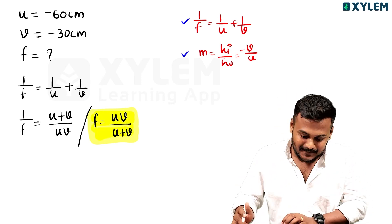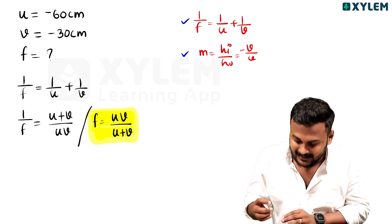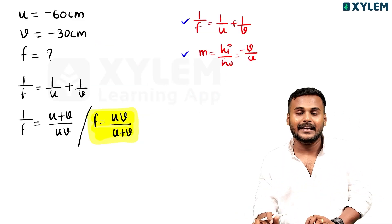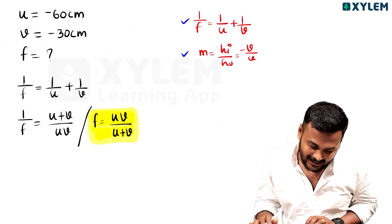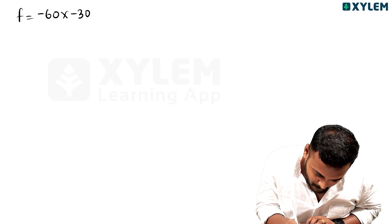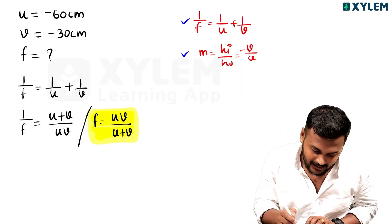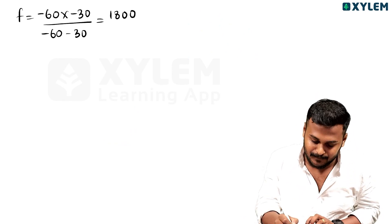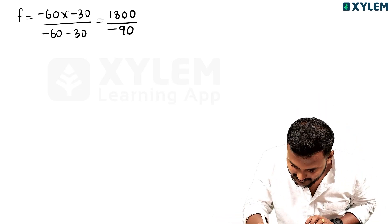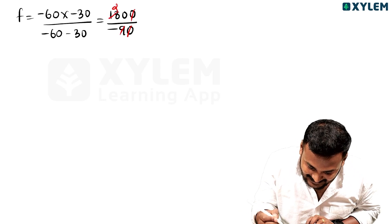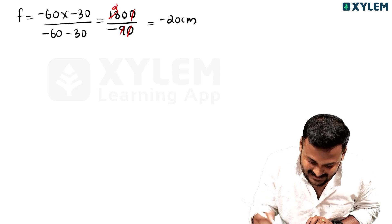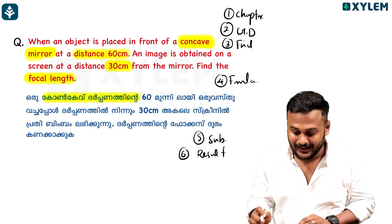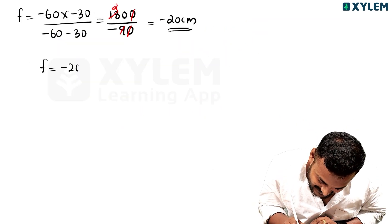So f equal to u into v divided by u plus v. U is minus 60, V is minus 30. So f = (minus 60 × minus 30) divided by (minus 60 plus minus 30). The result is f equal to minus 20 cm. Crystal clear — the result in one step is f equal to minus 20 cm.